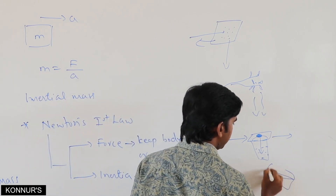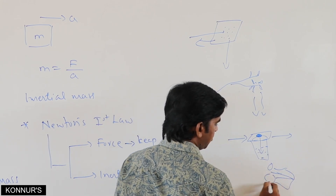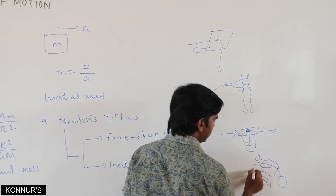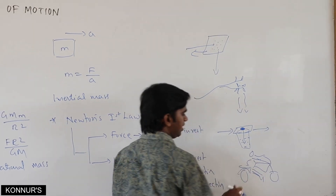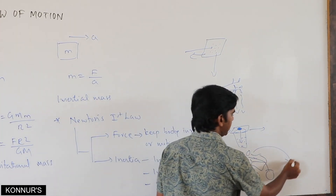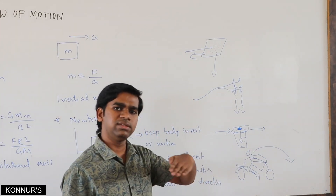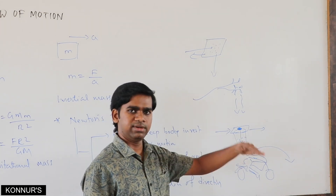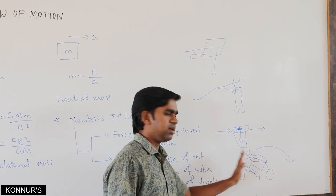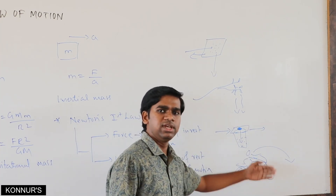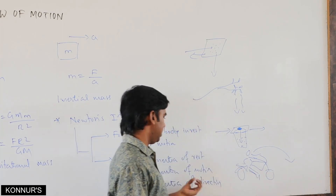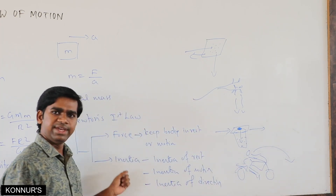If a person is driving a bike and suddenly applies the brake, the person will fall forward. This is because the body is in the state of motion. When the bike comes to rest suddenly, the body is still in the state of motion — that is why there is a chance the person will go forward and fall down. These are a few examples of inertia.